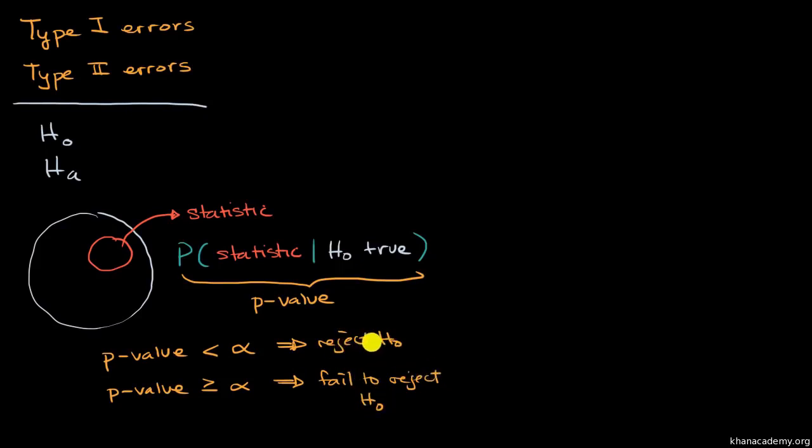And when we reject our null hypothesis, some people will say that might suggest the alternative hypothesis. And the reason why this makes sense is, if the probability of getting this statistic from a sample of a certain size, if we assume that the null hypothesis is true, is reasonably low, if it's below a threshold, maybe this threshold is 5%, if the probability of that happening was less than 5%, then hey, maybe it's reasonable to reject it. But we might be wrong in either of these scenarios, and that's where these errors come into play.